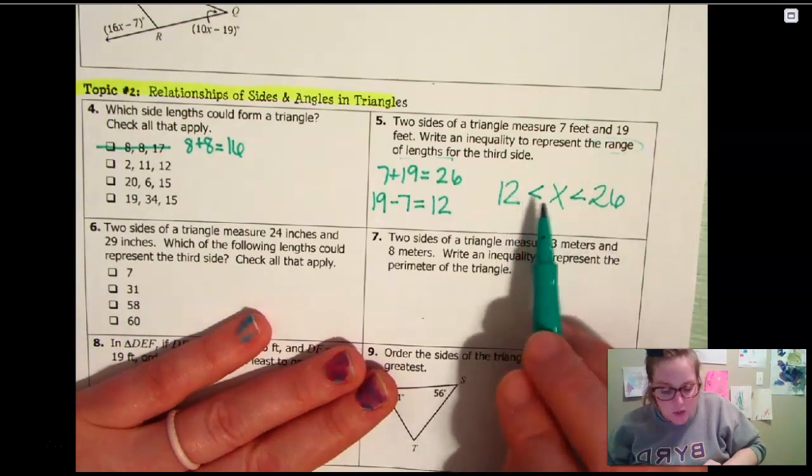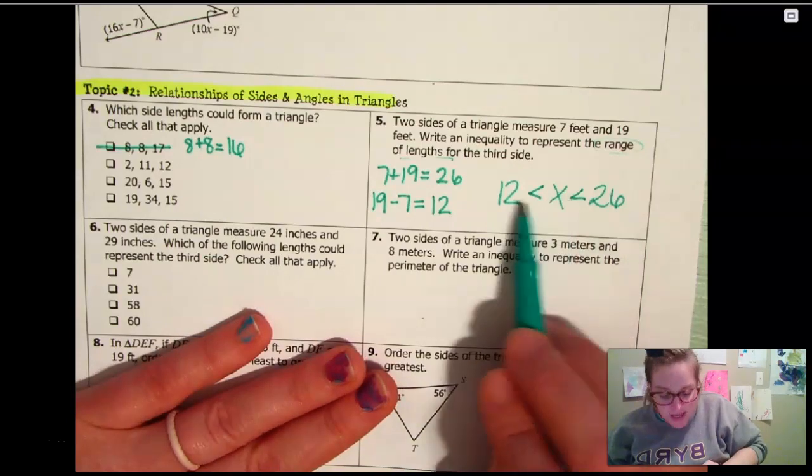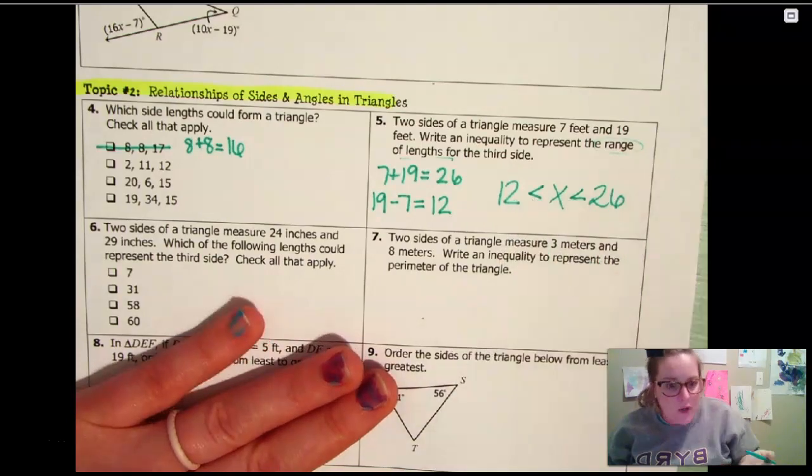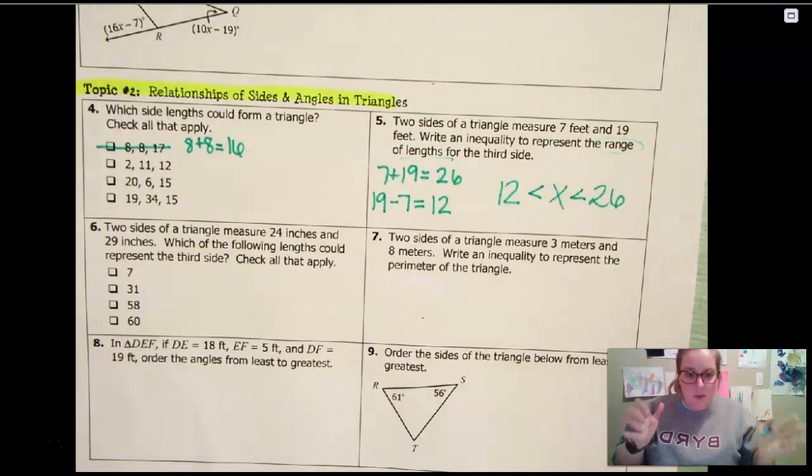So it could be thirteen, fourteen, fifteen, sixteen, seventeen, eighteen, nineteen, twenty, twenty-one, twenty-two, twenty-three, twenty-four, twenty-five. Any of those would be fine if we're dealing with like a whole number or the decimals or whatever. So that would be your range.